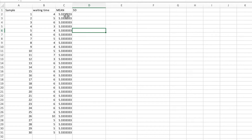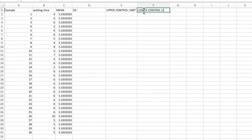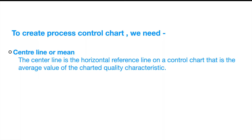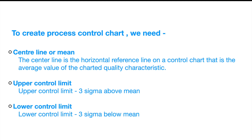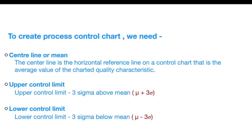Next we need to calculate standard deviation, which is required to compute the upper control limit and lower control limit. The center line is the horizontal reference line representing the average value of the 30 samples. Any value above the upper control limit is out of control, and any value below the lower control limit is also out of control.